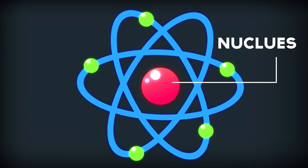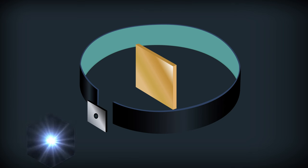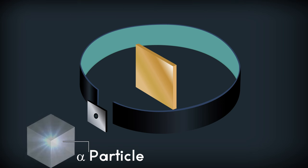The setup used in the experiment is shown here. A radioactive source rich in alpha particles was placed in a lead block with a narrow opening. These alpha particles were allowed to pass through the narrow opening.